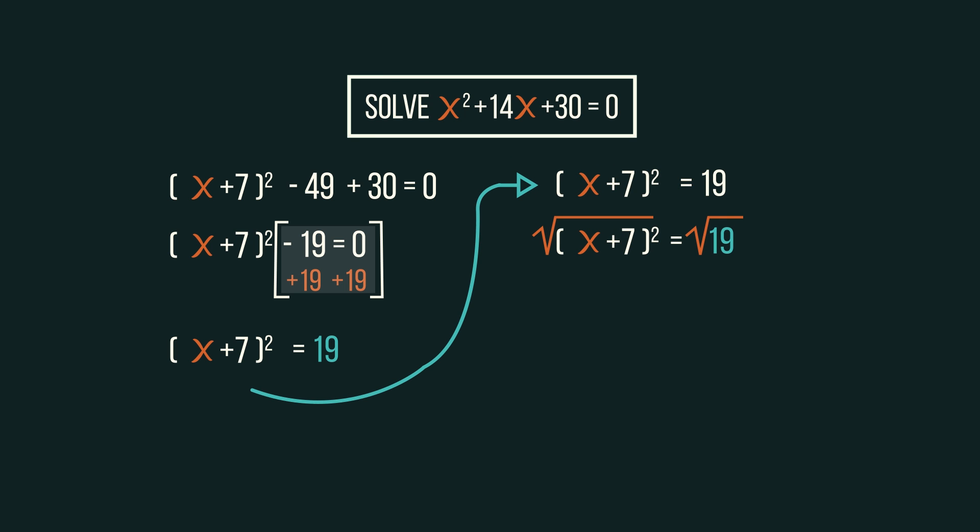Square root both sides, and because square rooting a square cancels out, we're left with x plus 7 equals plus or minus the square root of 19.